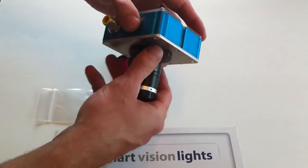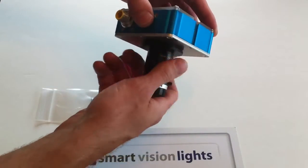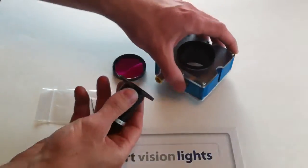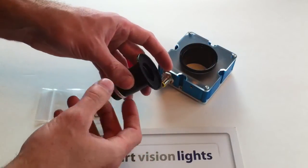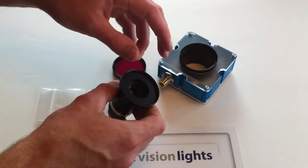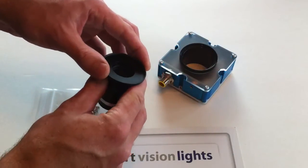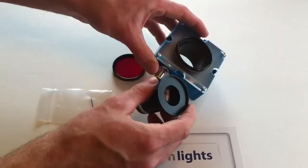The fourth mounting technique I'd like to discuss actually involves what we call a front mount. A front mount should be used if you're utilizing a lens with a very wide field of view. Sometimes the center tube can cause interference and get in the way. When that occurs, we recommend utilizing a front mount technique.